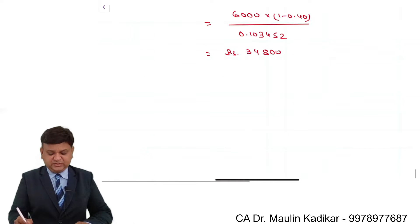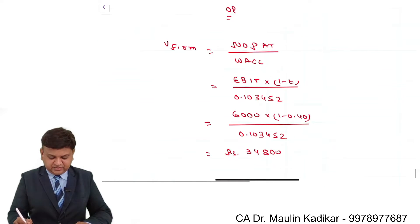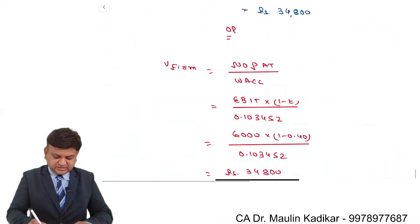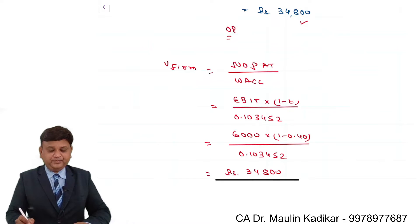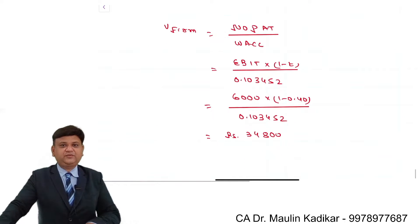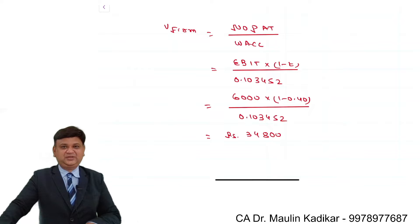That comes to 34,798.74, which is very near to 34,800. The small difference is due to fractionality. So the same answer can be found by both methods. This is the way the value of the firm can be calculated.